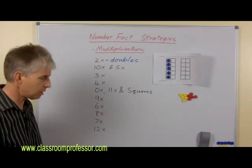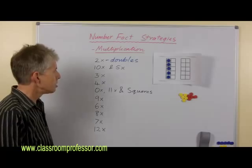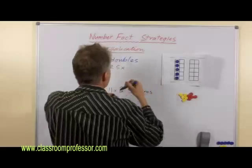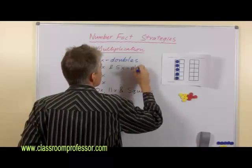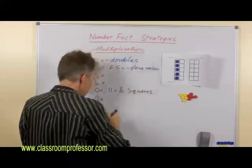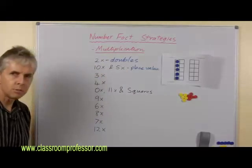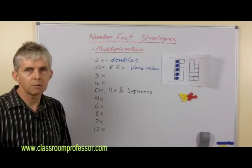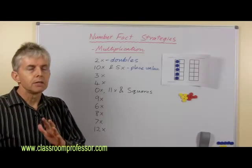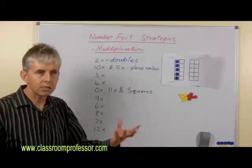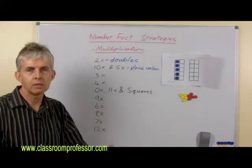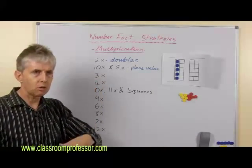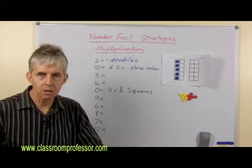Ten times and five times, this uses a place value strategy. Ten times is pretty obvious that it relies on place value. In fact, I tell my students, it's not a number fact. If you say, ten times seven equals seventy, you're really stating a place value fact. You're saying that seven tens is called seventy. And when we write it down, there's a seven in the tens column because it's seven tens and there's no ones.